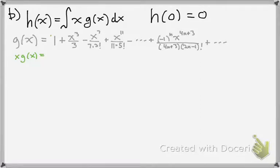So if we want x·g(x), we just multiply everything, every term, by x. So I'll write that down real quick.